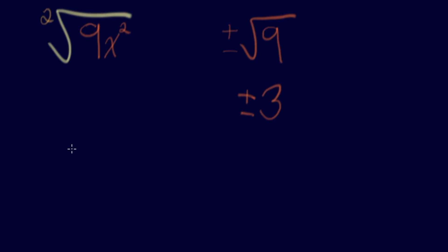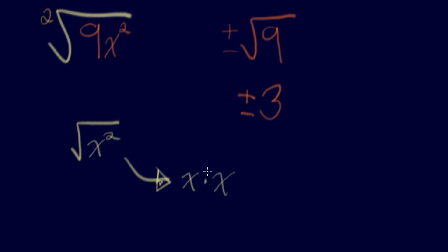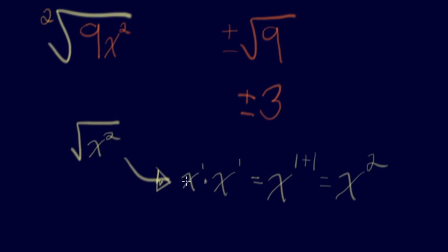Let's talk about what happens when we take the square root of something that is squared. To get x squared, we went x times x — each with an exponent of 1 — so x to the power of 1 plus 1, which is x squared. When you take the square root of something, you ask: what number times itself gives you this value? Since x times x equals x squared, the square root of x squared is x.